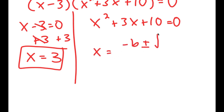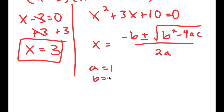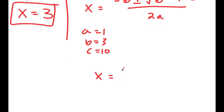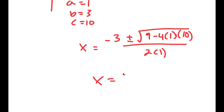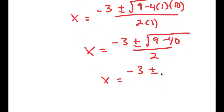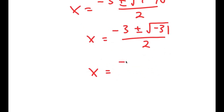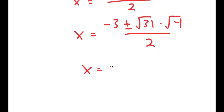Recall that the quadratic formula is negative b plus or minus the square root of b squared minus 4ac all over 2a. So in this case, a is 1, b is 3, and c is 10. So I get x is equal to negative 3 plus or minus the square root of 3 squared, which is 9, minus 4 times 1 times 10, all over 2 times 1. This is equal to negative 3 plus or minus the square root of 9 minus 40 over 2, which is equal to negative 3 plus or minus the square root of negative 31 over 2. The square root of negative 31 is the same thing as the square root of 31 times the square root of negative 1, and the square root of negative 1 is equal to i. So I get negative 3 plus or minus the square root of 31 times i over 2.